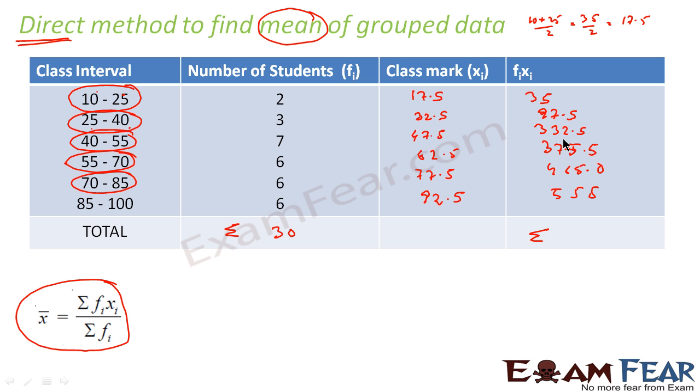If I add sigma fi xi, how much you get? 35 plus 97.5 plus 332.5, you add all these values. What you get is 1860. So we'll apply this formula. Sigma fi xi is how much? You add this, you got 1860. Sigma fi is how much? 30.